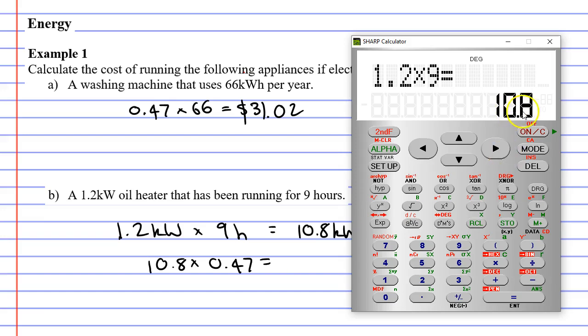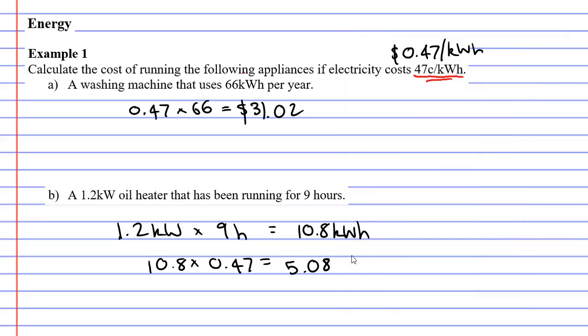Bringing up our calculator, we've already got the 10.8 times 0.47 equals, and we get $5.076. That's about $5.08. We'll round it up like so. You can see that an oil heater can become really expensive when you're running it every day during the month.